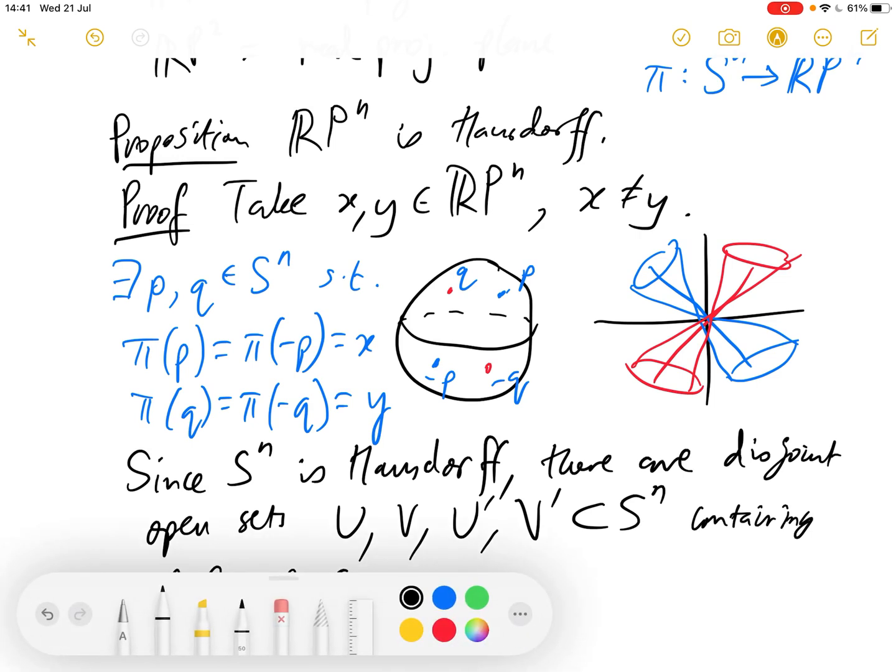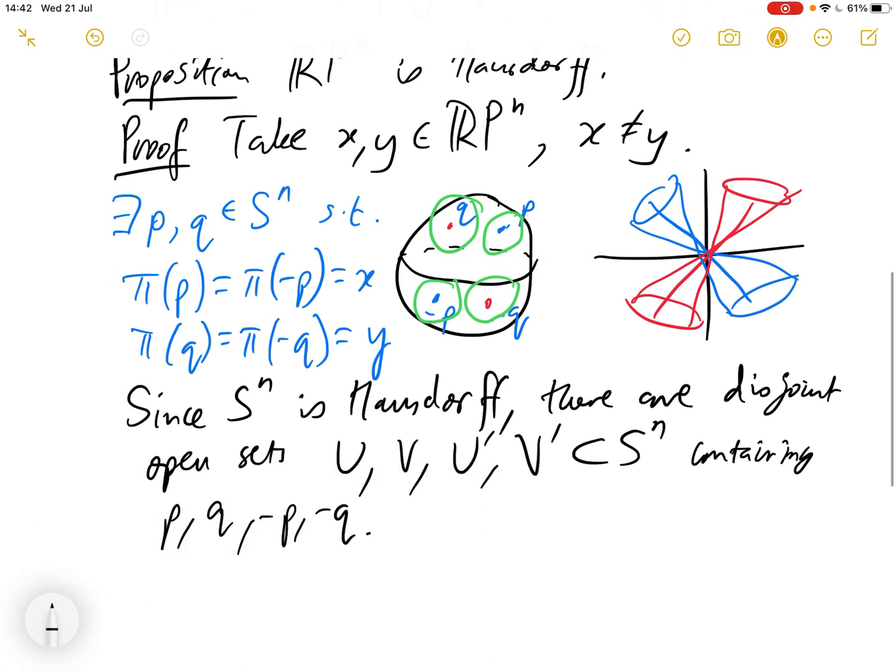So we can find, so going back to this picture here, we've got these four disjoint open sets on the sphere containing these points. And in fact, maybe it'll be easier if we take,